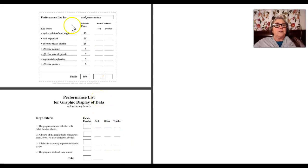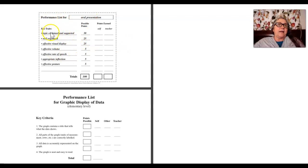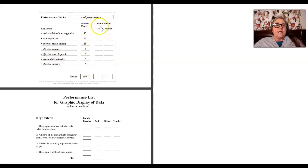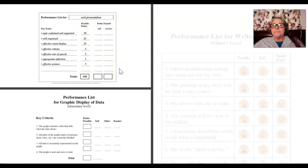Here's another example of one being used. This is one that you could use for anything — you would add in the traits of whatever skill you were working on, and then you would add in the points. Then allow for some self-scoring and then the teacher scoring.